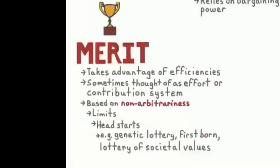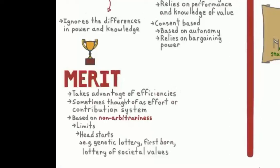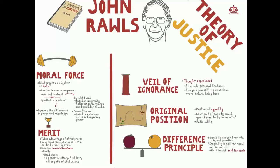The natural distribution, says Rawls, is neither just nor unjust, nor is it unjust that persons are born into society at some particular position. These are simply natural facts. What is just and unjust is the way that institutions deal with these facts.